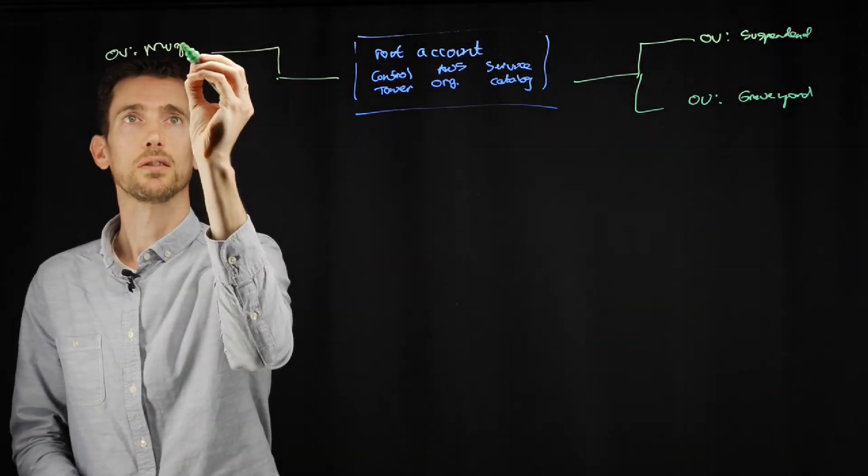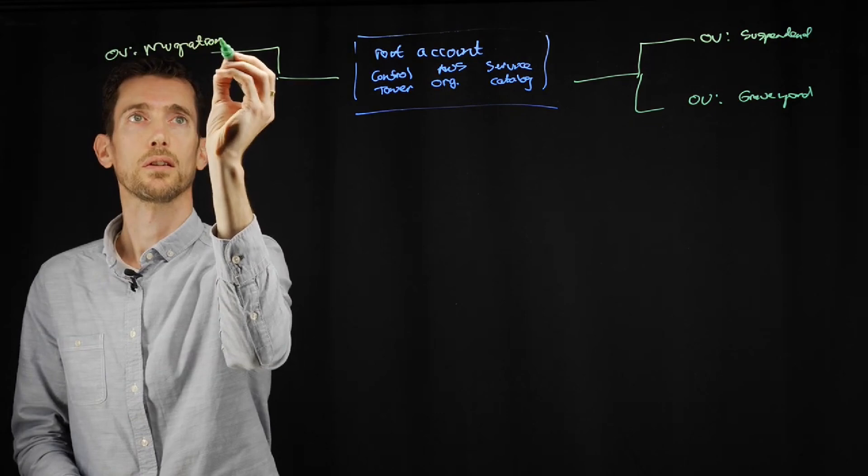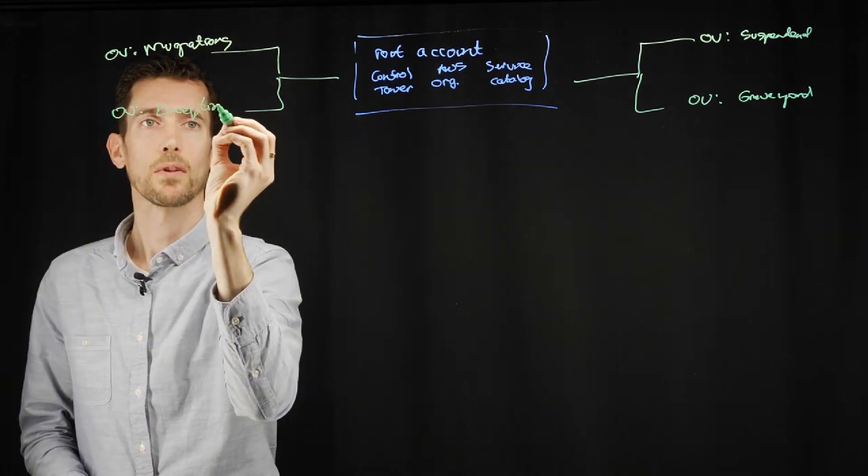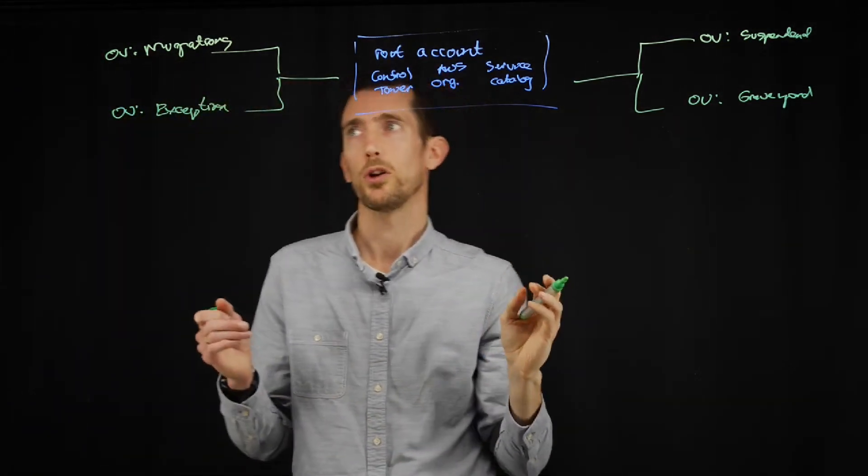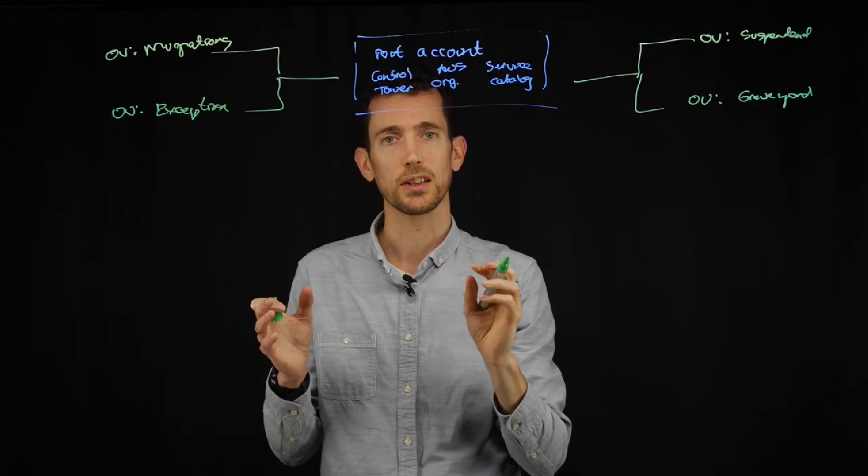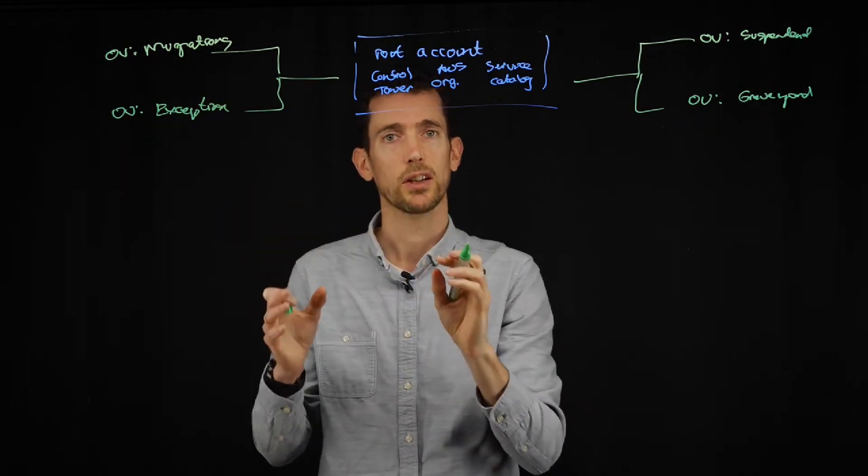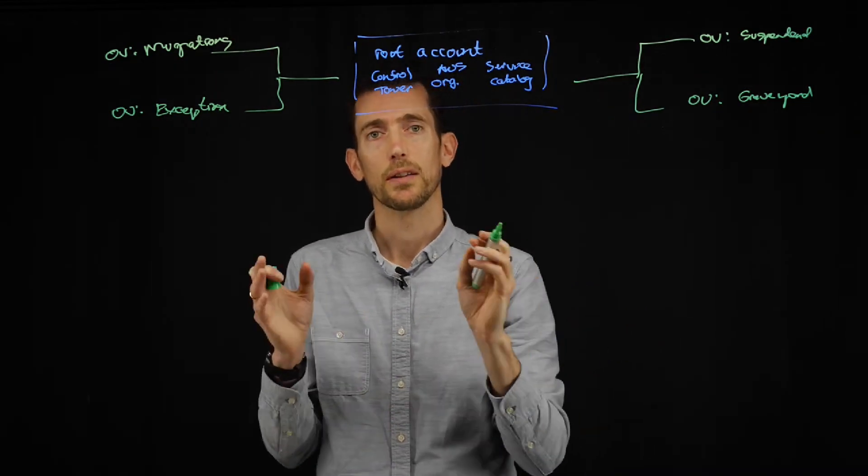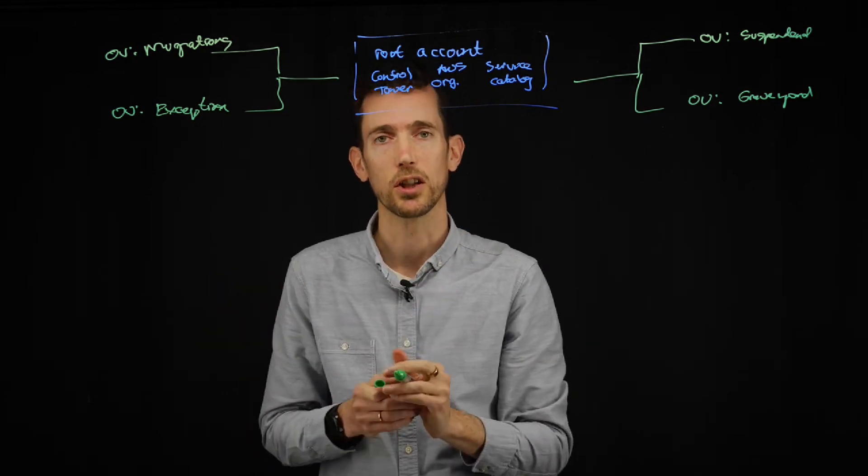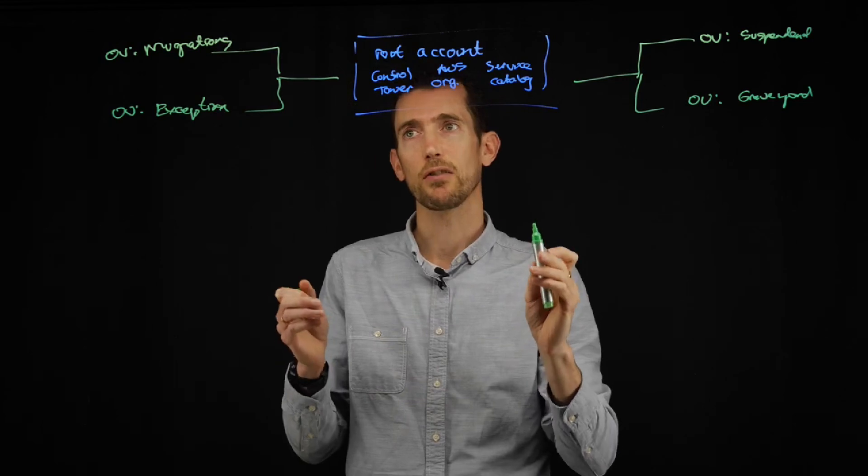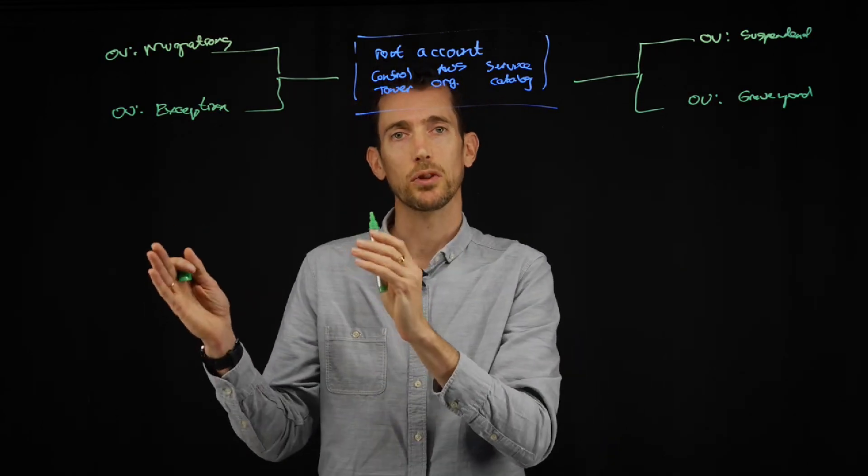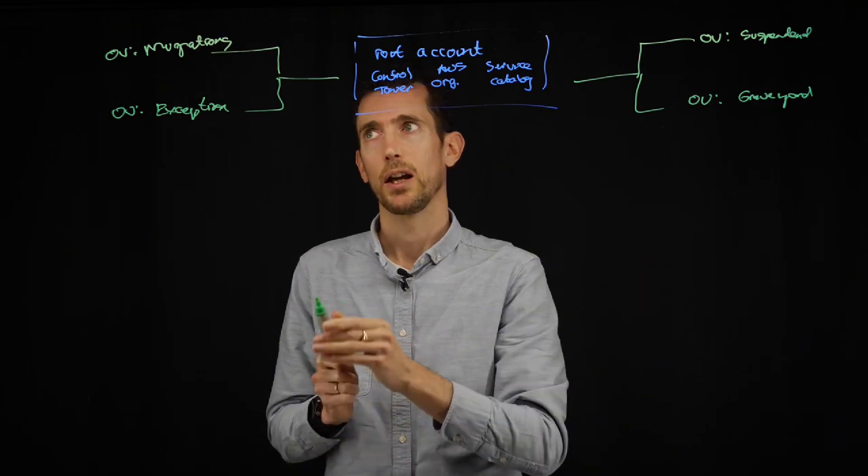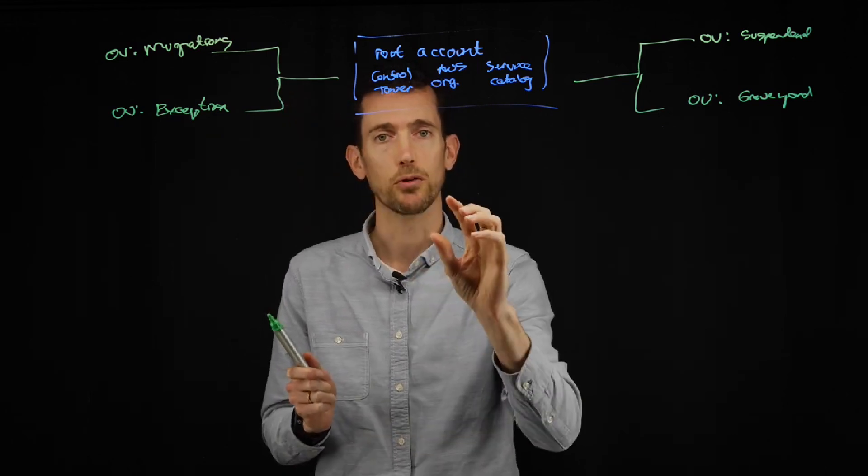Another area would be migrations. And another example would be exceptions. So organisational units allow you to apply different policies to different areas. So, for example, migrations. When you're bringing in workloads from outside of Azure, the workloads might not comply with the policies that you intend on implementing. And therefore you need an area where you can put them in, see what the compliance status is and then make changes to those environments so that they comply. And then once they comply with the policies, you can then move them elsewhere.